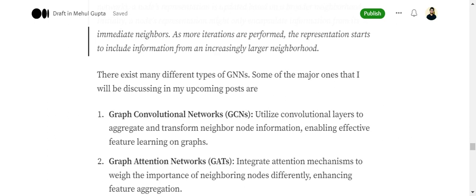Graph Convolutional Networks use convolutional layers to aggregate and transform neighboring node information, enabling effective feature learning. It can be taken as a feature engineering operation, but in the latent space.